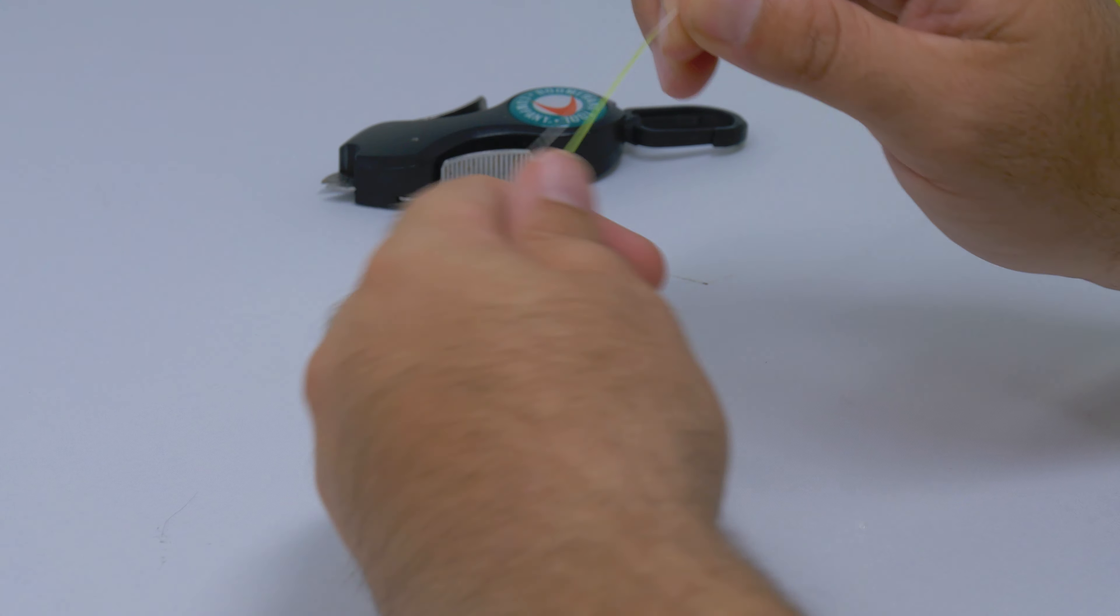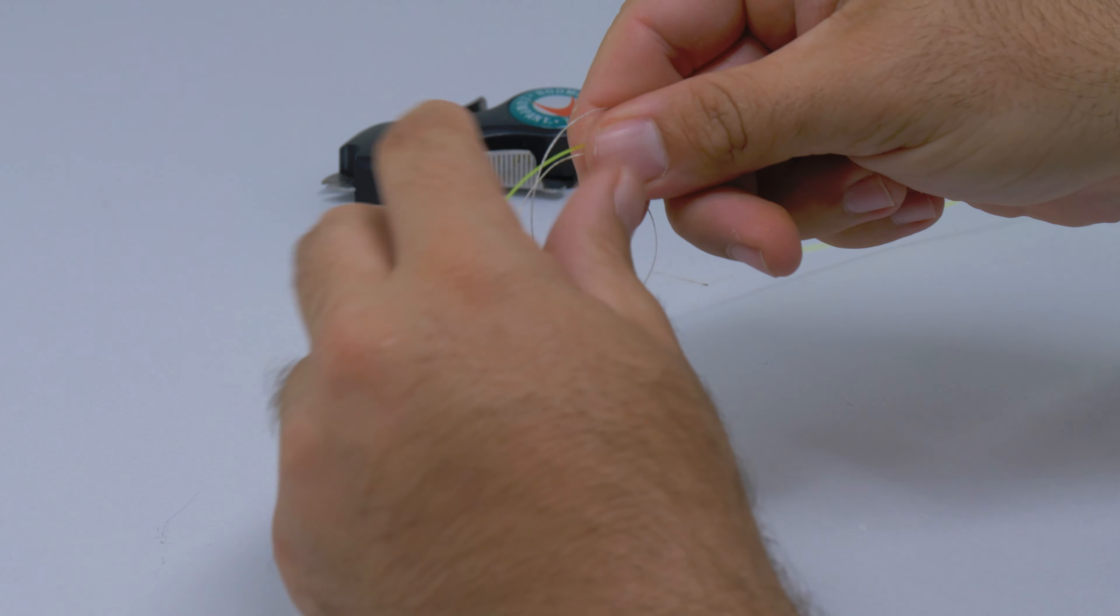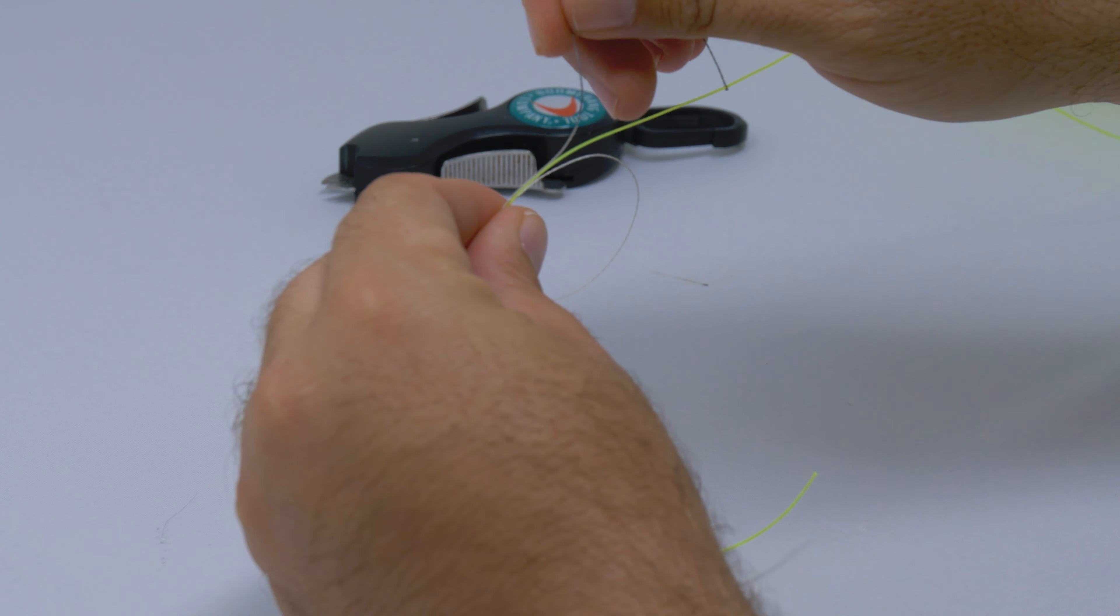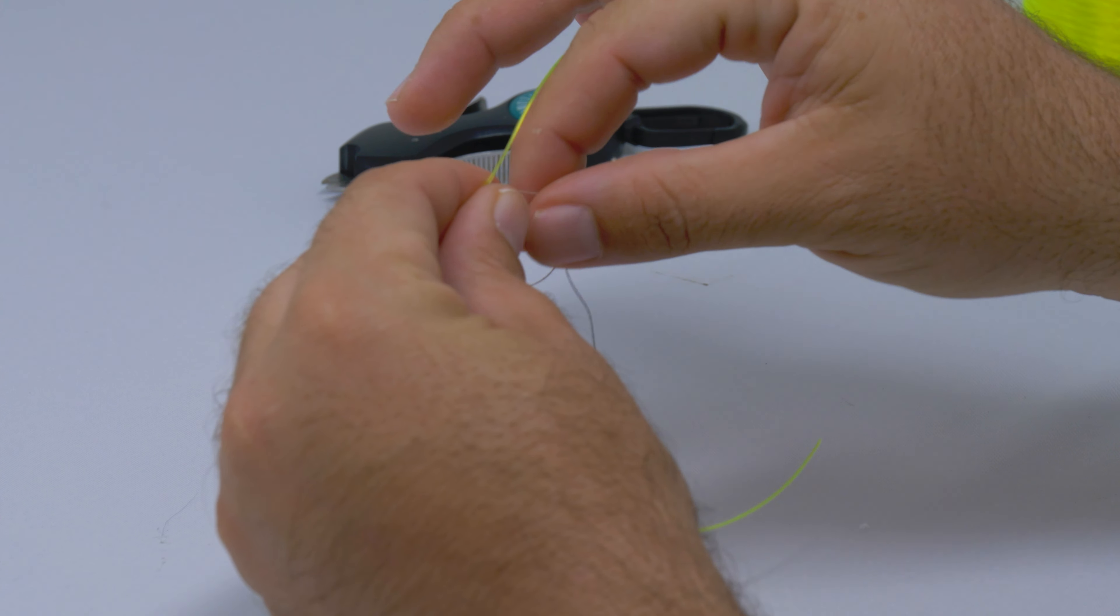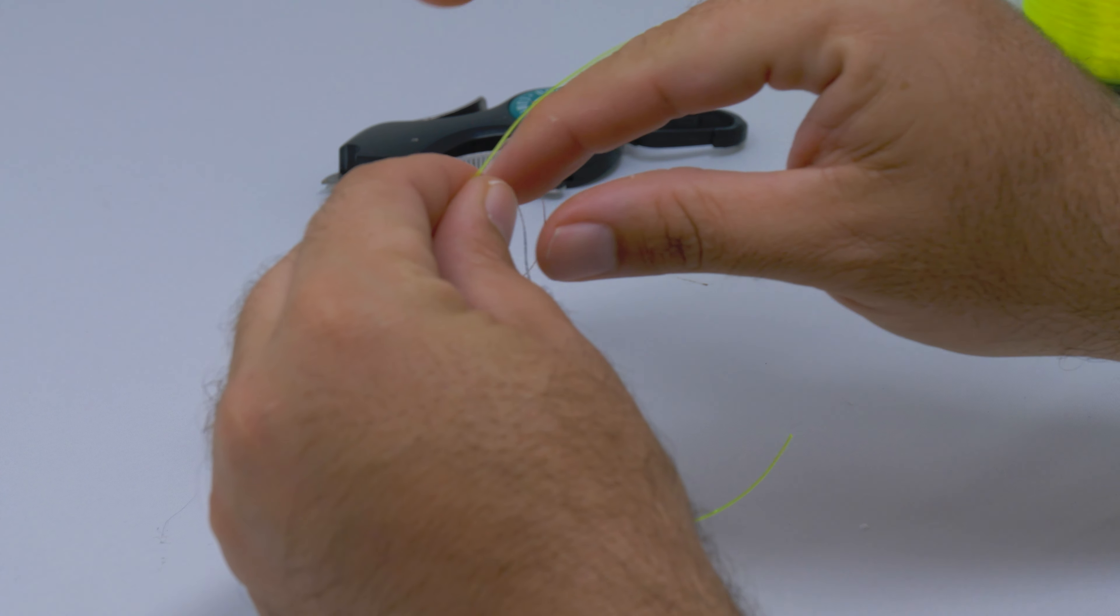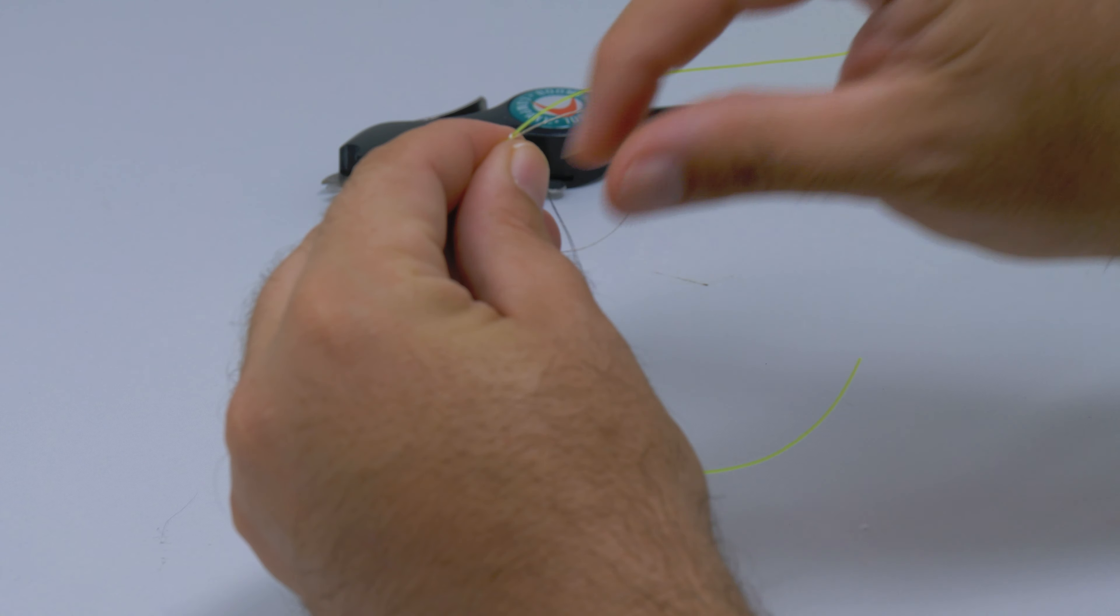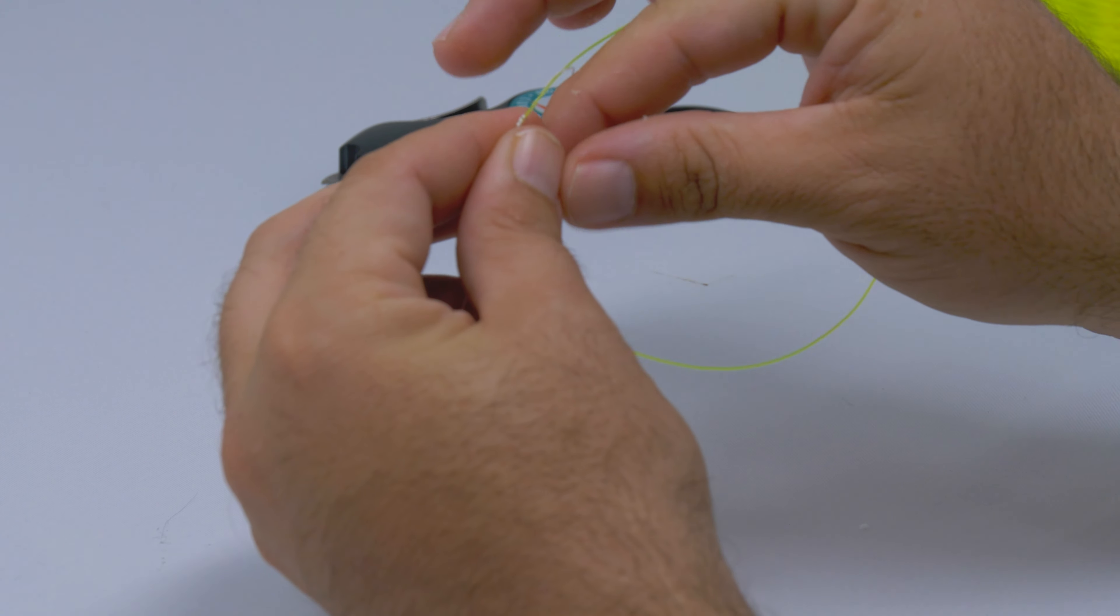Then what I like to do is make a loop in the braid first. What you want to do is wrap this around both the leader material and inside of your loop about seven to eight times. Let me go ahead and do that.